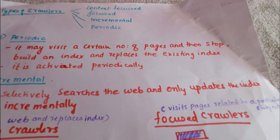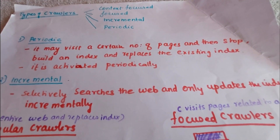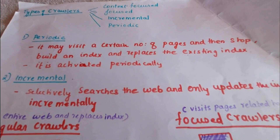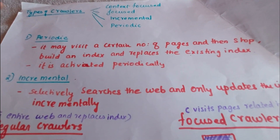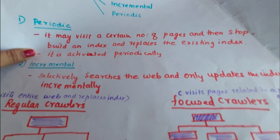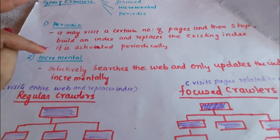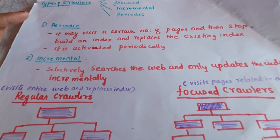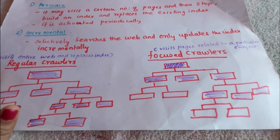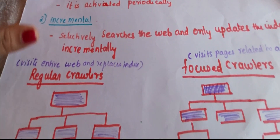The basic types of crawlers are: context focused, focused, incremental, and periodic. The periodic crawler visits a certain number of pages, stops, builds an index, replaces the existing index, and is activated periodically — it always replaces the existing index. The incremental crawler selectively searches the web and only updates the index incrementally, so there is no replacement — it just increments and updates the index. These crawlers facilitate the creation of indexes used by search engines and keep them up to date with little human intervention.